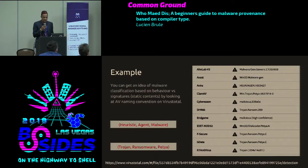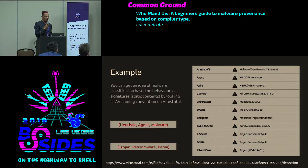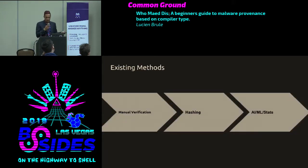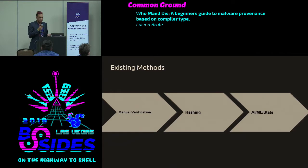For example, if you open up VirusTotal — a gigantic database of viruses, malware, and benignware — you can see how all the antivirus companies classify malware, and they actually differ. Some look at composure, some look at behavior. You'll see things like 'heuristic,' 'agent,' 'malware,' but also 'trojan,' 'ransomware,' and 'Petya.' We can also use machine learning, AI, and statistics to immediately tell us what malware is composed of and what it does — which are two different things.